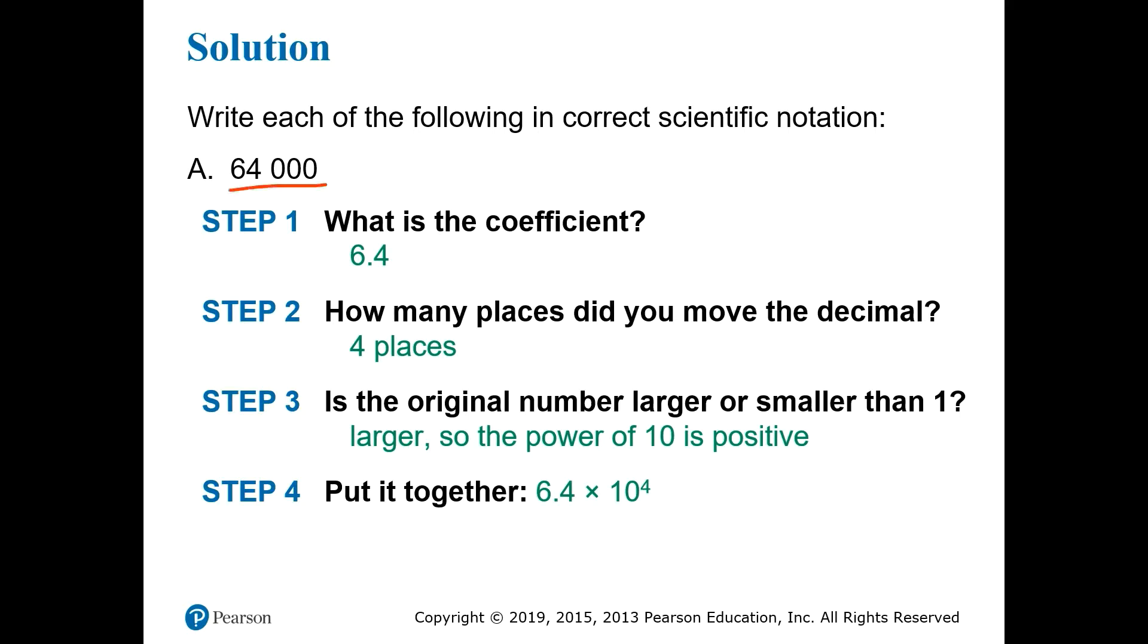For this first one, 64,000, we put the decimal right after the 6 to get a coefficient of 6.4. Then we see that this is 4 places over from where the decimal was, starting here, 1, 2, 3, 4. So the power will be either plus or minus 4. Next, we recognize that this is a large number, much greater than 10, and so the power must be positive. Putting that together, we get 6.4 times 10 to the 4th power.